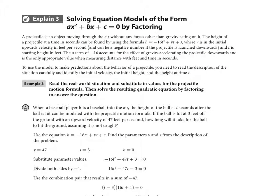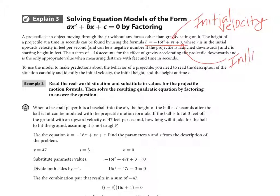In modeling, use the height function h = −16t² + vt + s. Here v stands for initial velocity or speed — positive if going up, negative if going down. And s is your initial height, your starting point, similar to the y-intercept.